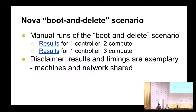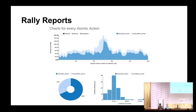I spent some time running just boot and delete. I have a local setup with one controller and two compute nodes, and in the Austin colo I got one more, so I did some against three compute nodes. There is a disclaimer — in the testing I've done, it's kind of exemplary because the network is shared and some of the boxes are shared, so I don't know what else is going on on that network. The links in the slides will take you to the actual dynamic HTML results. You get pretty pictures from the Rally output tool showing statistics — the min, max, and average of booting and deleting.